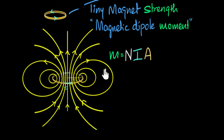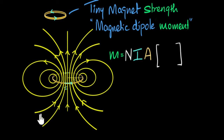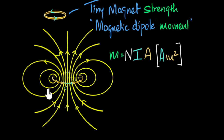This is how we calculate the magnetic moment — the strength of this tiny magnet. It's the number of loops N multiplied by the current I multiplied by the area A. So M = NIA. The units: N has no units, I is amperes, and area is meters squared. So we represent the moment in ampere meters squared (A·m²). That's how we express the dipole moment.